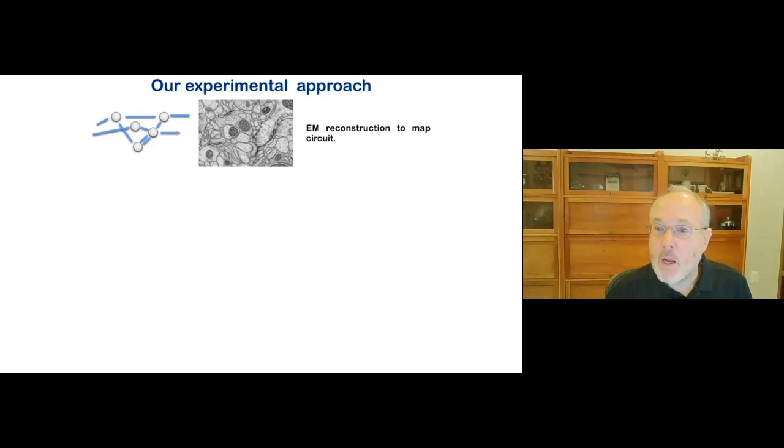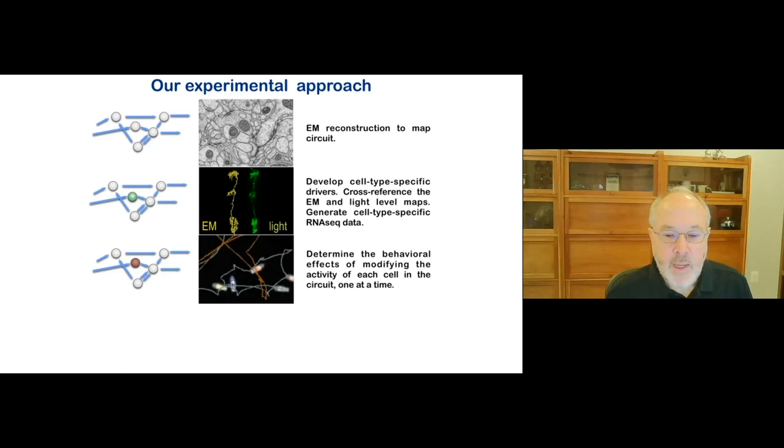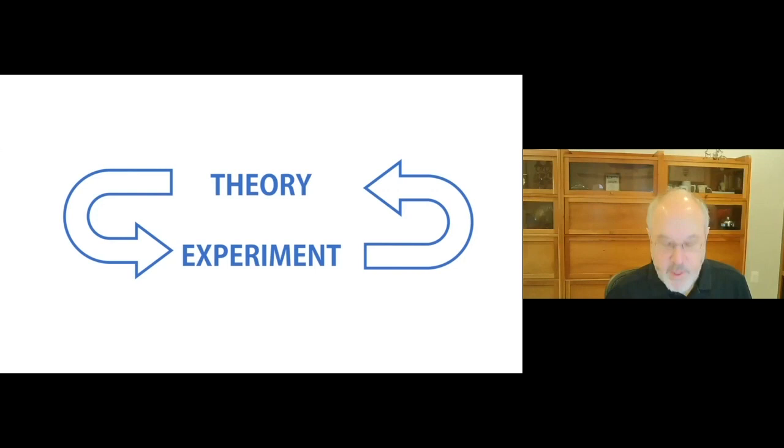We will start with the connectome, the main subject of today's talk. But we will also need many other types of data. We will need to use our genetic tools to manipulate individual cell types. We will then study the effects of those manipulations on behavior, and we will make physiological measurements. And all this will take place in a tight loop between theory and experiment.